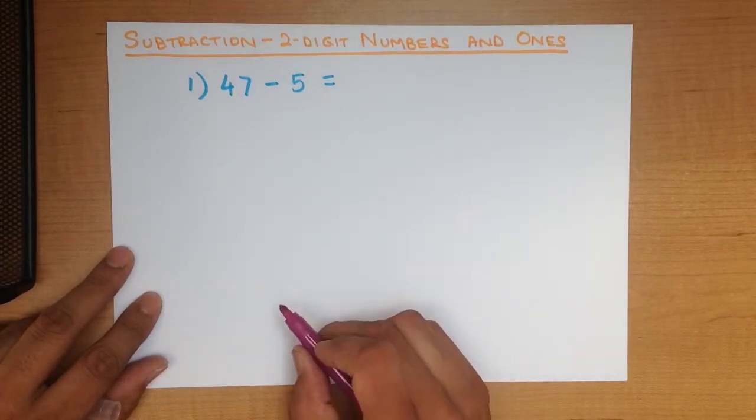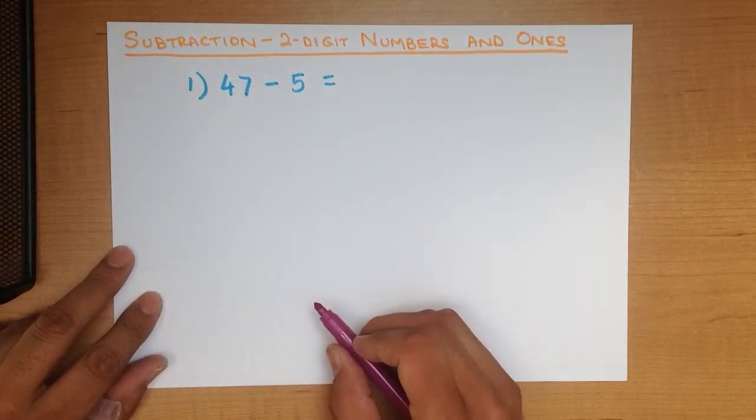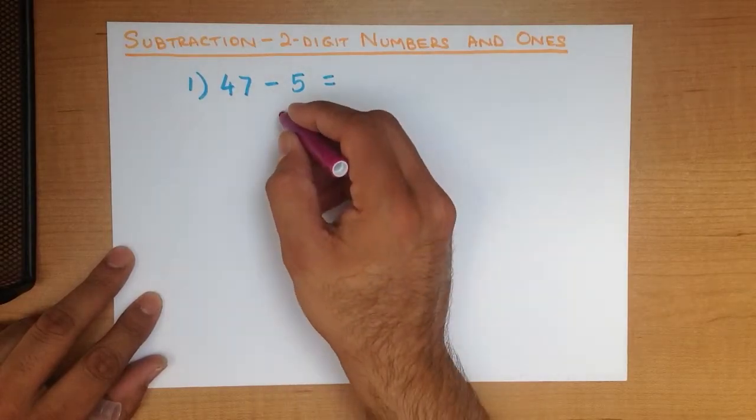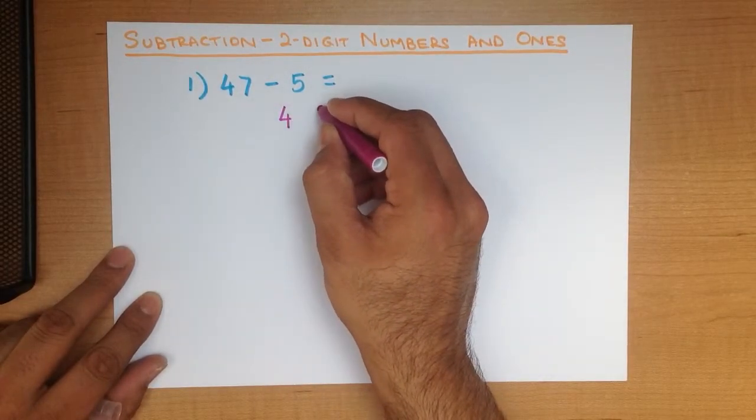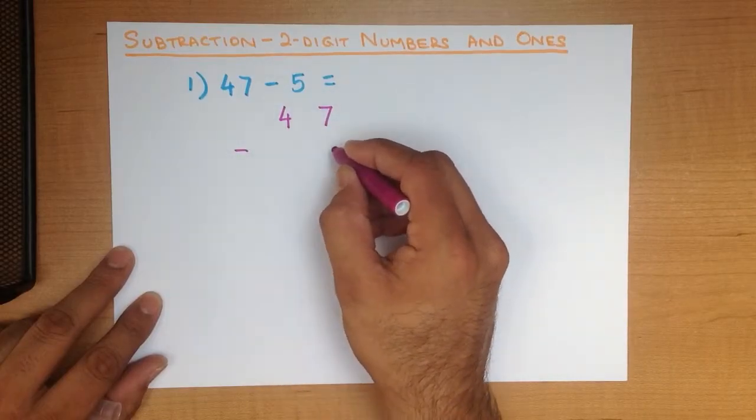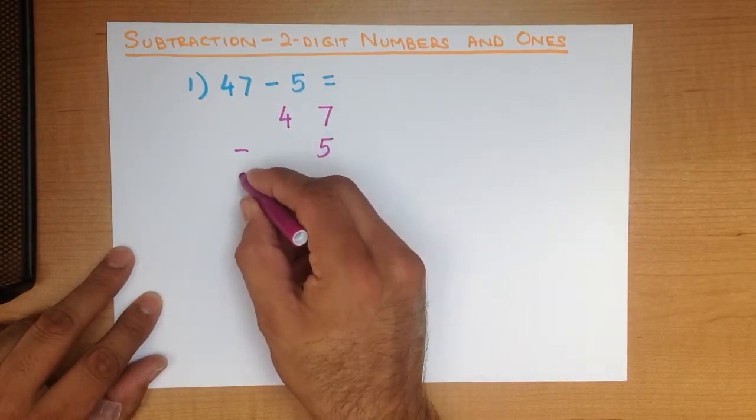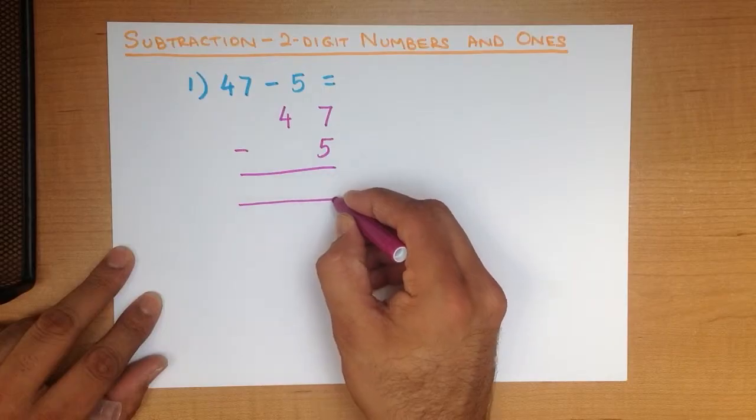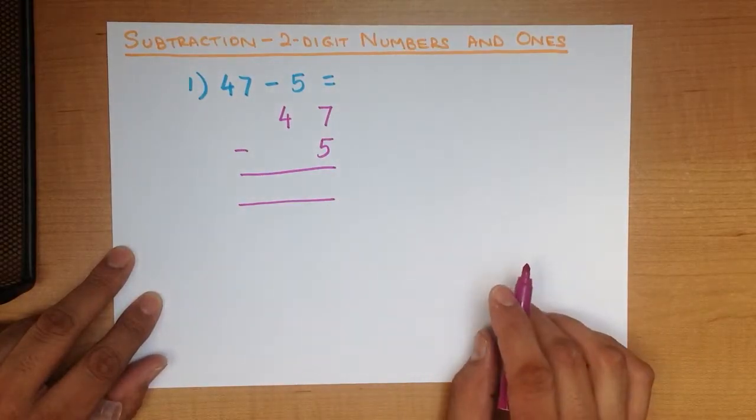So the vertical format, we write these numbers down in columns. So let's do that. 47 minus 5. Let's put an equal sign. 47 minus 5.